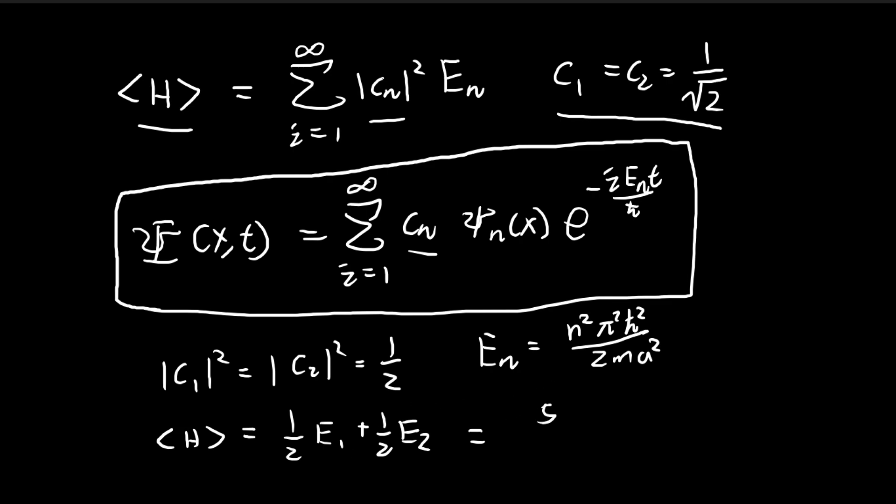So if you add them up, you get a 5 pi square h-bar square. And then there's a 2 at the bottom. There's also another 1 over 2 here due to the probability. So the denominator becomes a 4. So this is your answer. This is the expected value of energy.